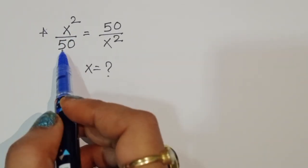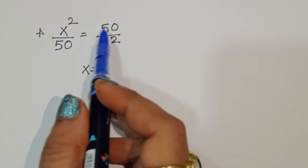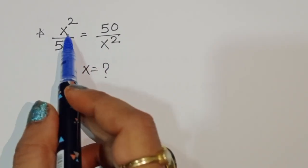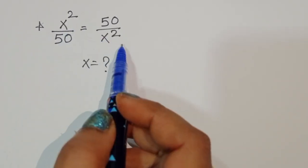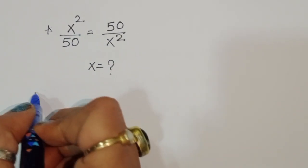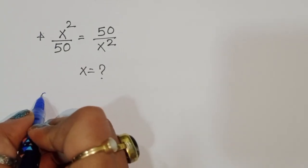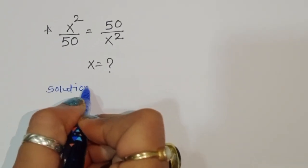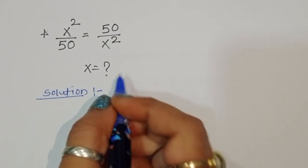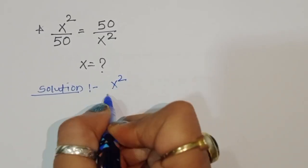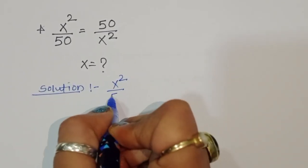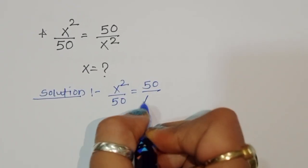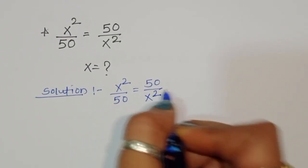The question is: x squared divided by 50 is equal to 50 divided by x squared. We have to find out the value of x. Let's see the solution.